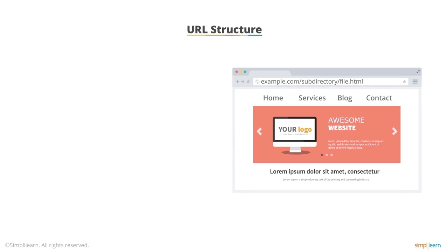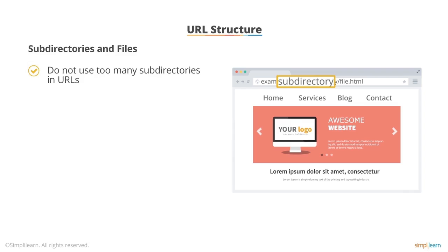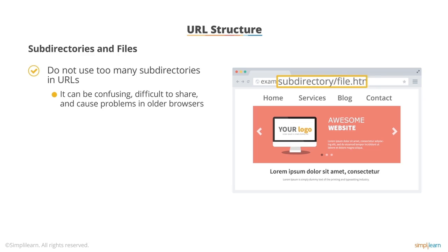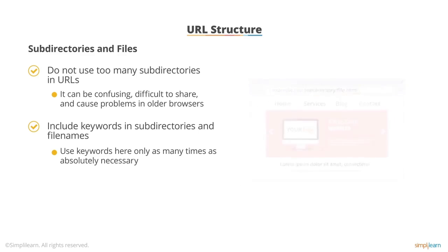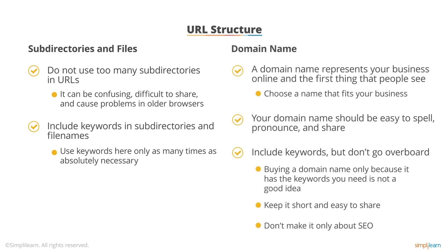What about everything after the domain name? That is called subdirectories, and you can have, in theory, unlimited subdirectories — but from an SEO perspective, you do not want to do that. If you have lots of subdirectories, it's going to be confusing, hard to share, and cause problems in older browsers. Your best practice is to keep as few subdirectories as possible — this will be good for both robots and humans. Within the subdirectories and file names, make sure to include your keywords, but don't overdo it. Generally, once or maybe twice if it's already in the domain name is sufficient.